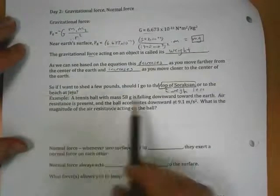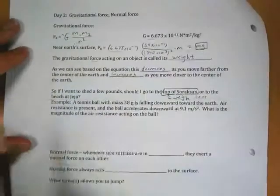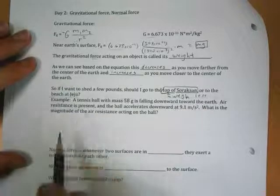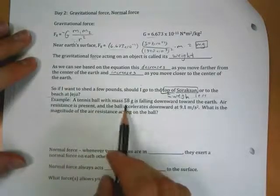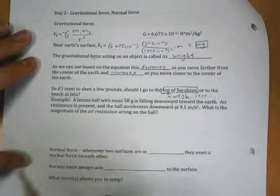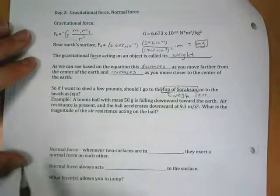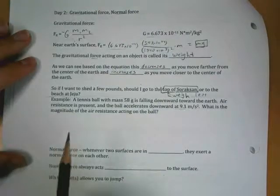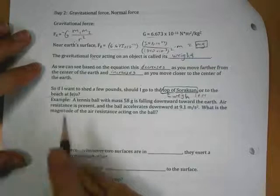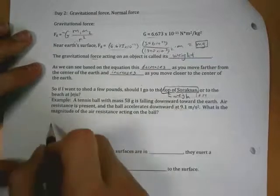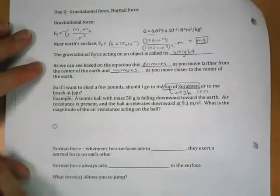So here's an example where we can apply this little definition of weight. A tennis ball with mass 58 grams is falling downward toward the earth. Air resistance is present. The ball accelerates downward at 9.1 meters per second squared. Since there's air resistance, we're accelerating a little bit less than gravitational acceleration. What is the magnitude of air resistance acting on the ball? Well, as always, we want to draw a diagram. Here's my tennis ball.